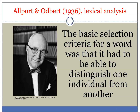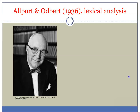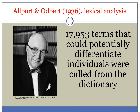When Allport and Odbert went through the dictionary, they extracted and listed all of the words that could distinguish one individual from another — words describing more or less of a characteristic. For example, the word 'generous' could describe one person as extremely generous and another as not so generous. Out of those 400,000 terms, Allport and Odbert identified approximately 18,000 words that could potentially differentiate individuals from each other.